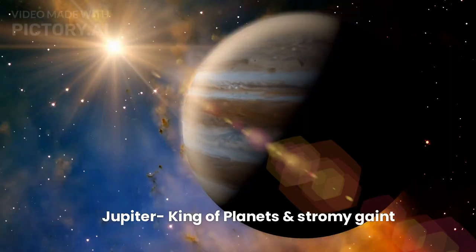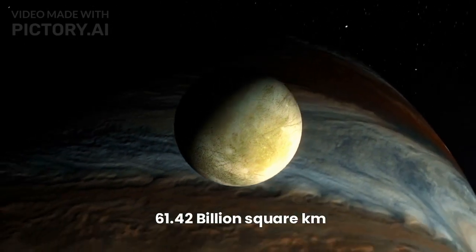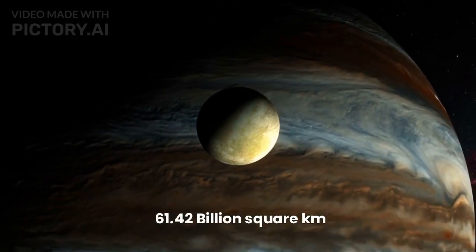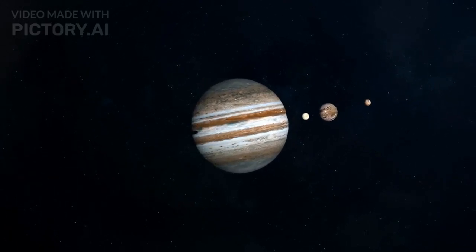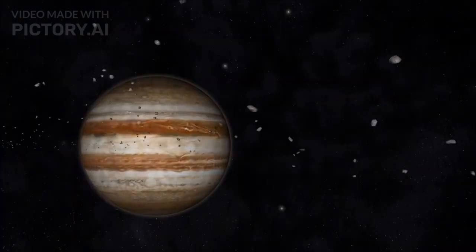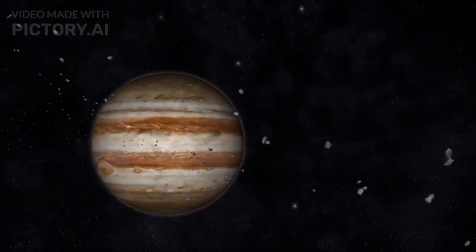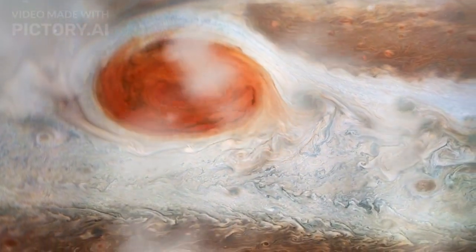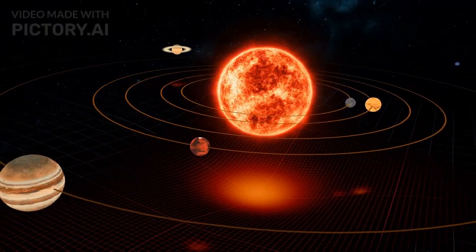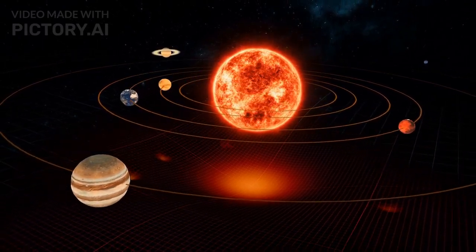Fifth, Jupiter King of Planets and Stormy Giant. The surface area of Jupiter is 61.42 billion square kilometers. Jupiter's colossal size makes it the largest planet in the solar system. Its colorful cloud bands, driven by powerful atmospheric currents, captivate astronomers. The great red spot, a centuries-old storm, adds to its allure. Jupiter's immense gravity acts as a cosmic protector, shielding inner planets from potential impacts.